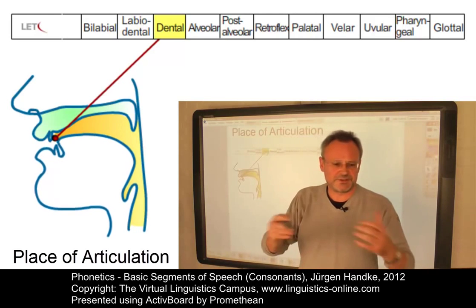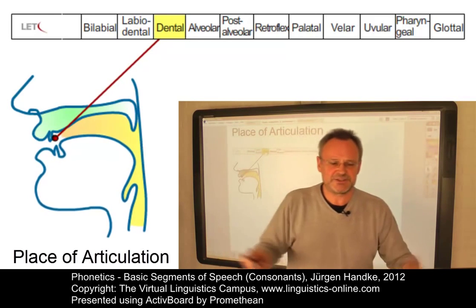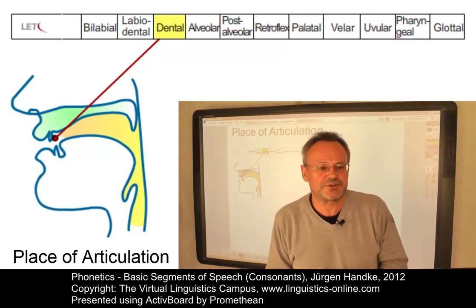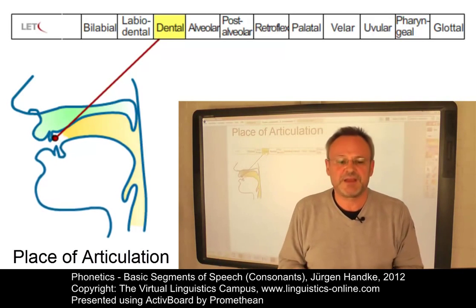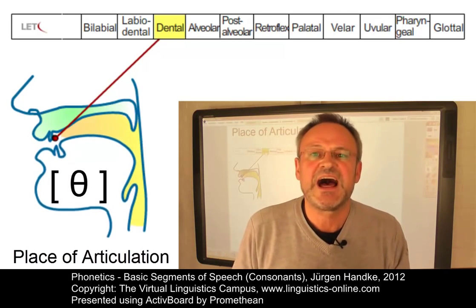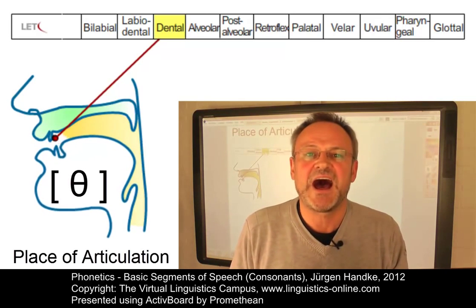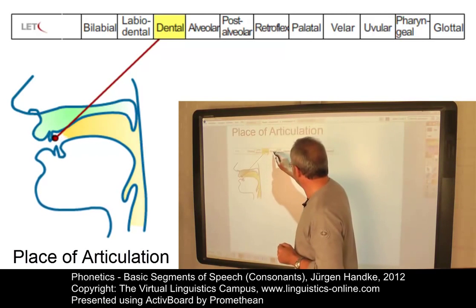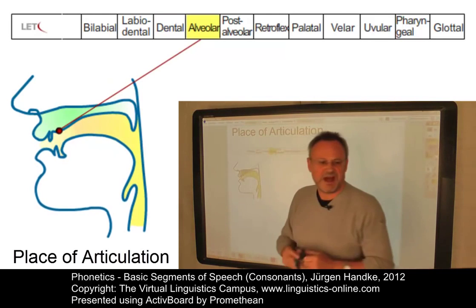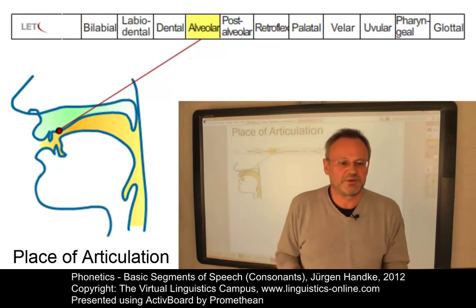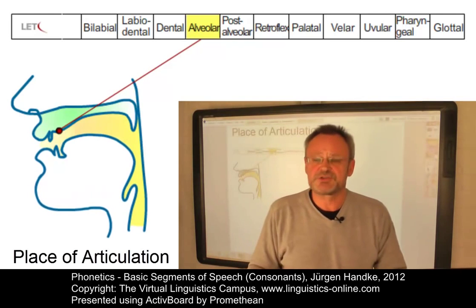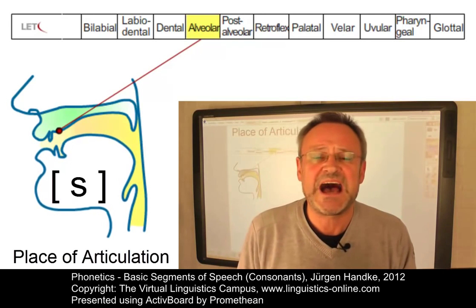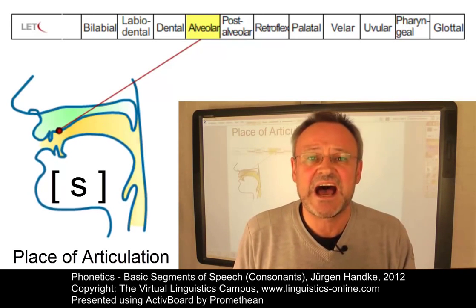The dental place of articulation — from Latin 'dents, dentis,' meaning 'tooth' — involves a constriction between the tongue and the upper teeth, producing a consonant like a-fa. The alveolar place of articulation involves a constriction between the tongue and the alveolar ridge, producing a consonant like a-sa.